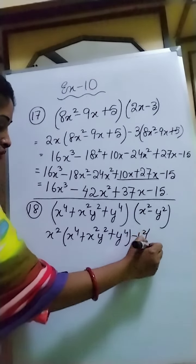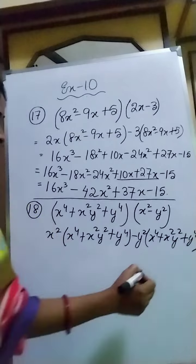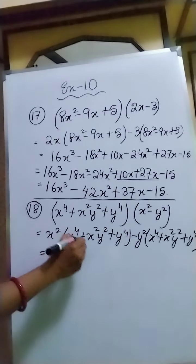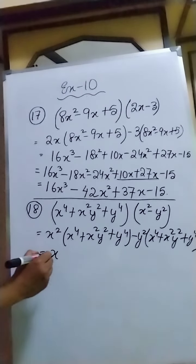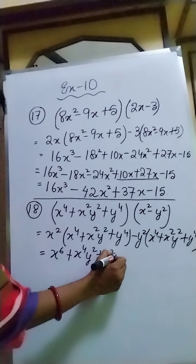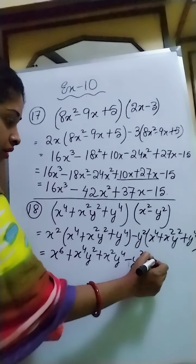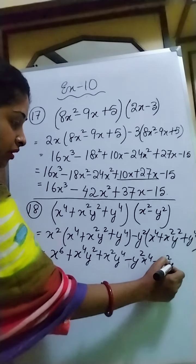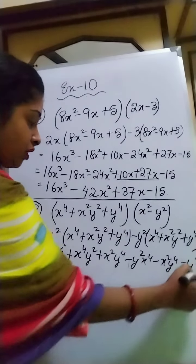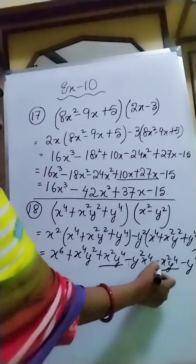It will be x squared into x to the power 4 plus x squared y squared plus y to the power 4, minus y squared into x to the power 4 plus x squared y squared plus y to the power 4. So now we multiply: x squared into x to the power 4 gives x to the power 6, and then minus y squared into x to the power 4 gives minus x to the power 4 y squared, minus x squared y to the power 4, minus y to the power 6.